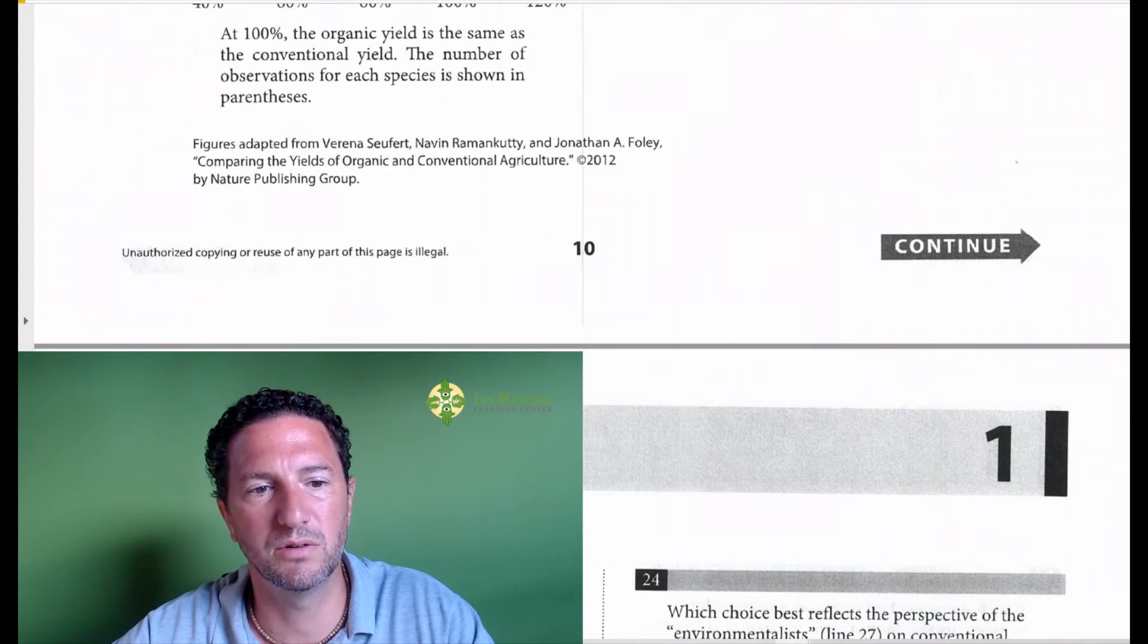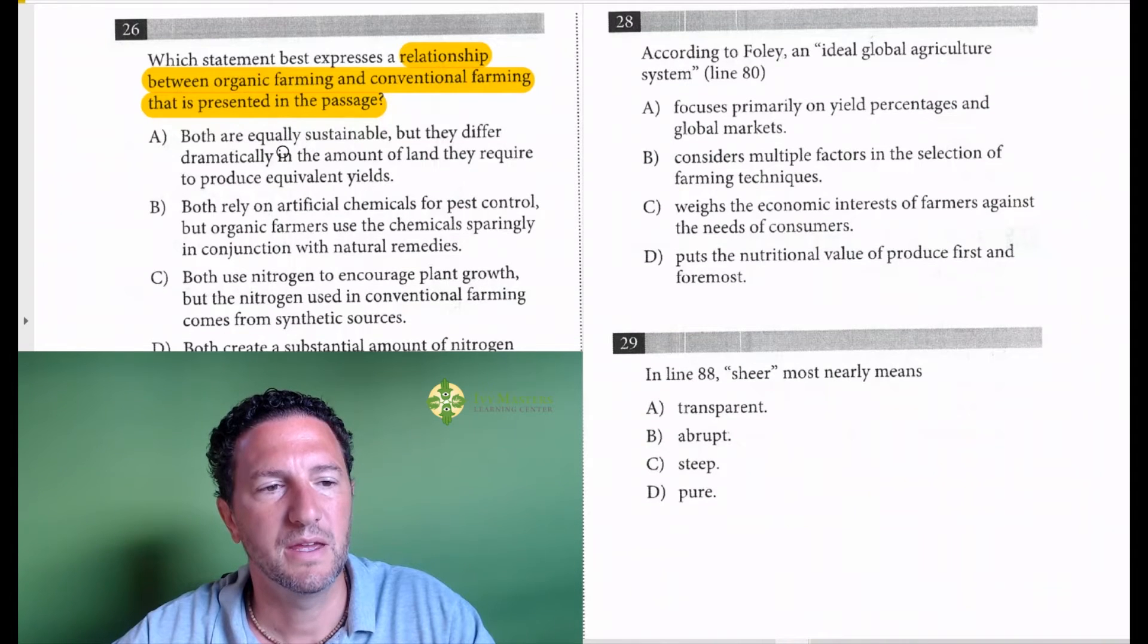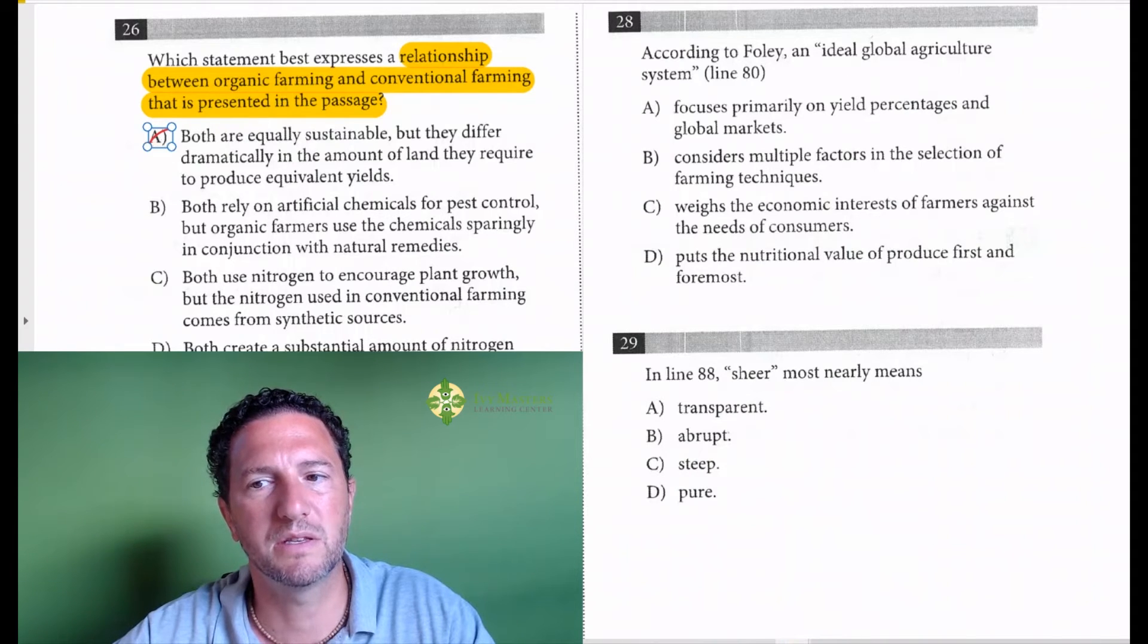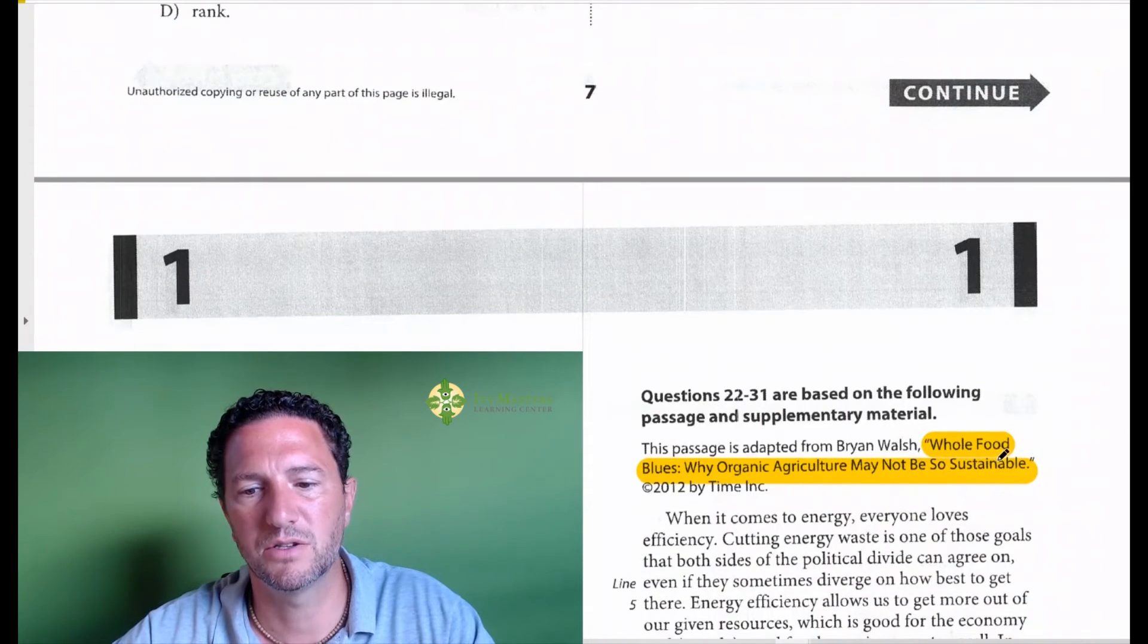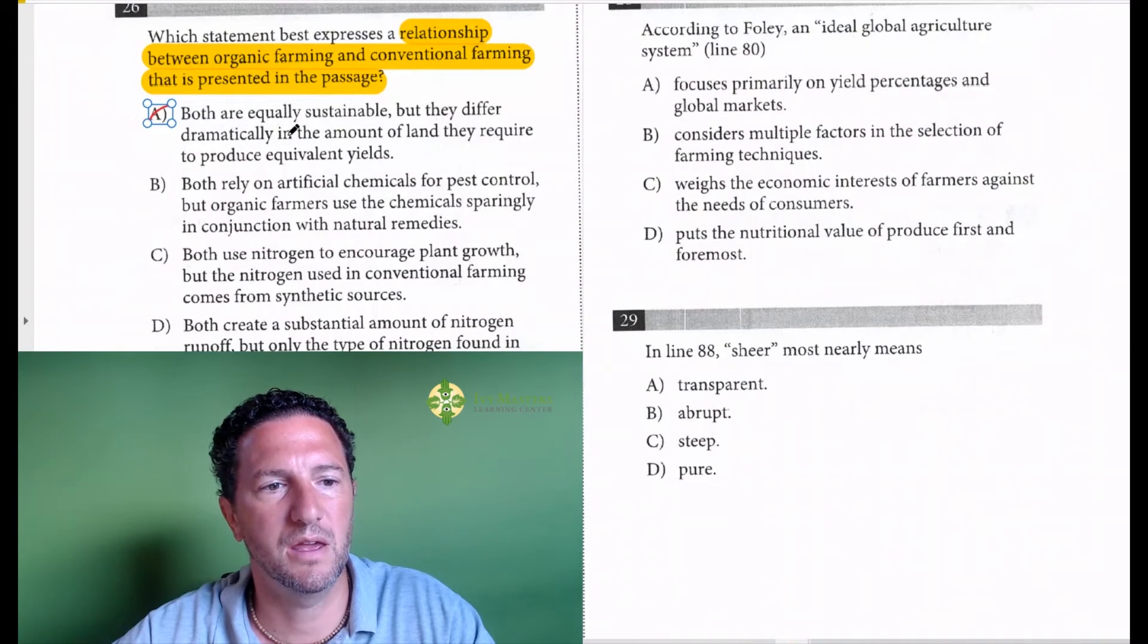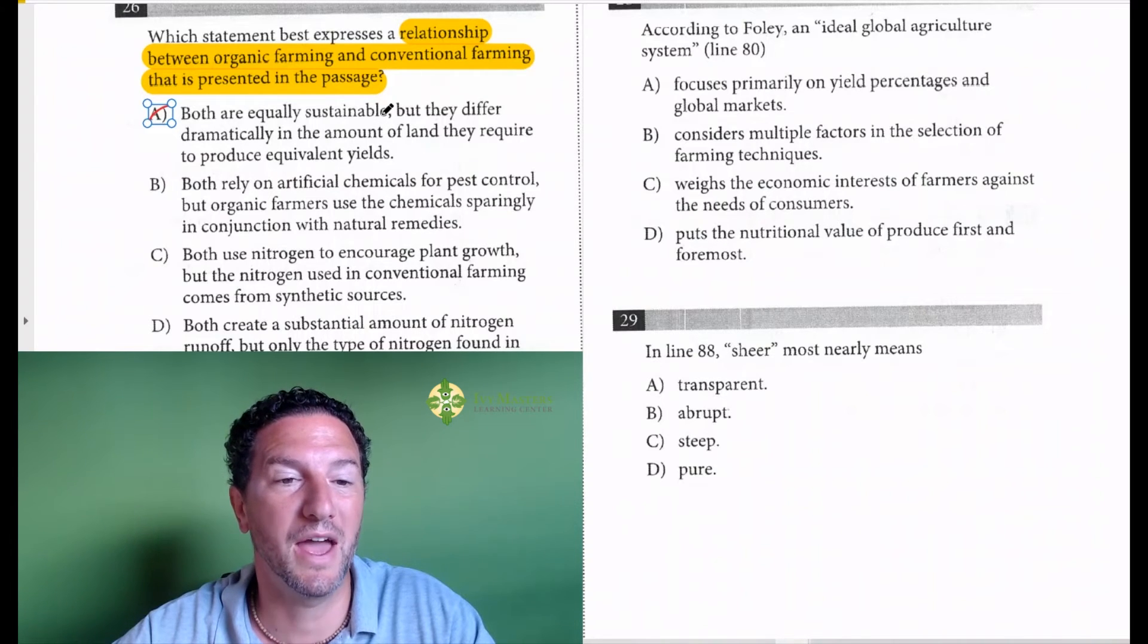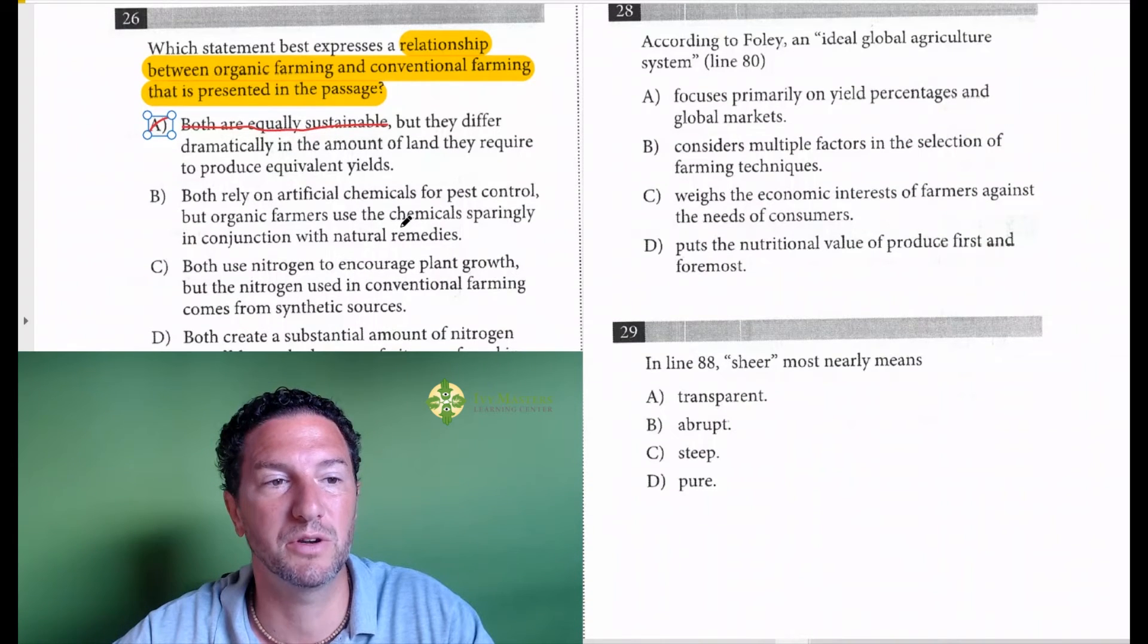So we go to the answer choices. Answer choice A: both are equally sustainable. Right there you can stop and eliminate. Why? Because the title said, why organic farming may not be so sustainable. And, but they differ dramatically in the amount of lands they require to produce equivalent yields. That's true, but both are equally sustainable is not true based on the information we're given in this passage.